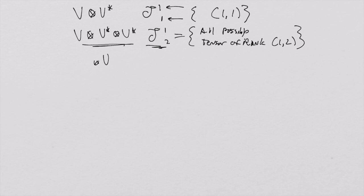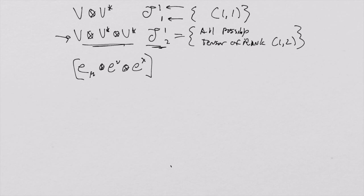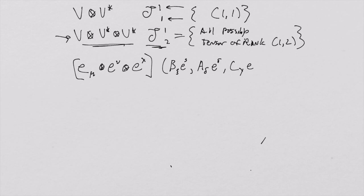Let's work with this particular tensor product space. A basis vector in that space is E_mu tensor E_nu tensor E_lambda. That particular basis vector is a map, and it's going to operate on: first, a covector B^eta E_eta, and then two vectors, A^delta E_delta and C^gamma E_gamma.